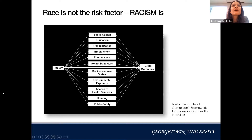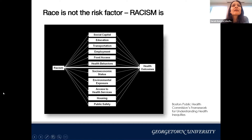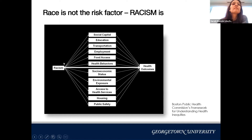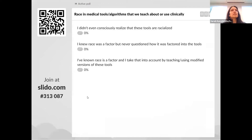The Boston Public Health Commission's framework shows that social determinants of health are listed in the middle, but rarely do we acknowledge the racism underlying every single one of them that then affects health outcomes. Race isn't the risk factor — it's actually racism that is the risk factor.